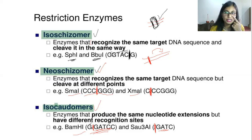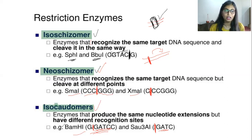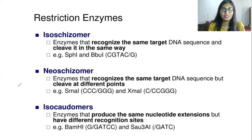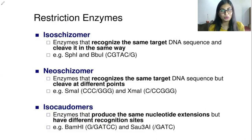These three terms — isoschizomers, neoschizomers, and isocaudomers — are very very important. Go through the examples and cleavage sites. Apart from that, about restriction enzymes, the types, examples, and nomenclature — everything is important. I hope the topic of restriction enzymes is clear. If any doubts, let me know in the comment box. Like my video, share and subscribe to my channel — your one like will give motivation to create more videos. All the very best for your KZ examination preparation. Thank you so much for watching.